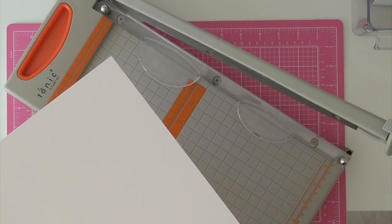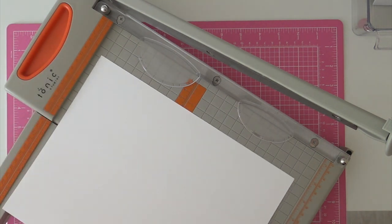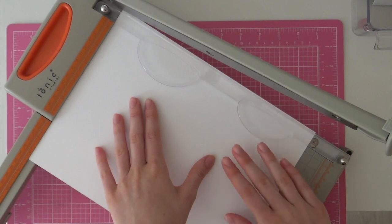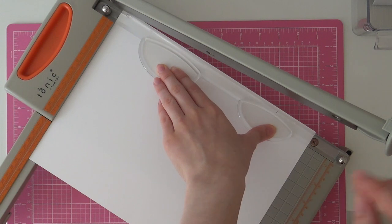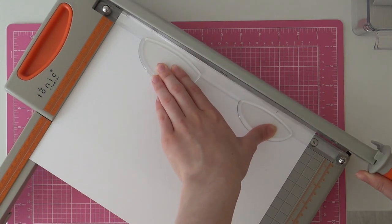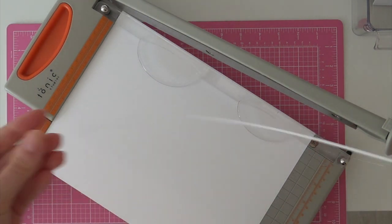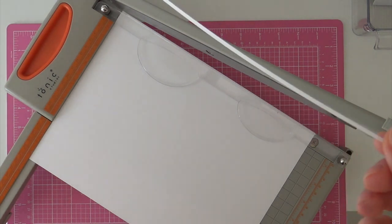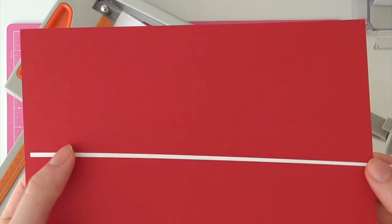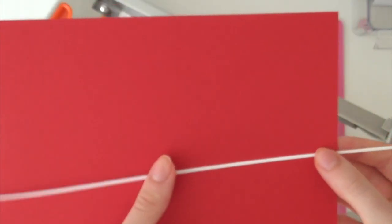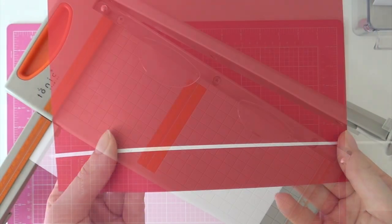All right, so I also want to show you that you can cut the tiniest little strips with this cutter. So again, I'm sliding my paper under this guard and I'm going to cut a really thin strip of paper. So as you can see, this is a really thin piece of cardstock and again, there are no fuzzy edges. It's perfectly straight. It's a clean cut and it's just really awesome.